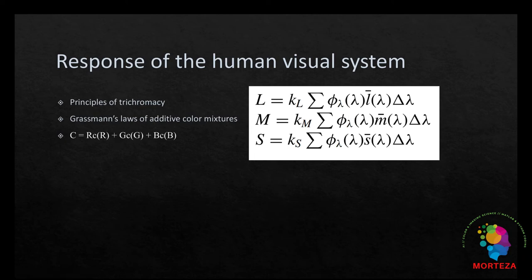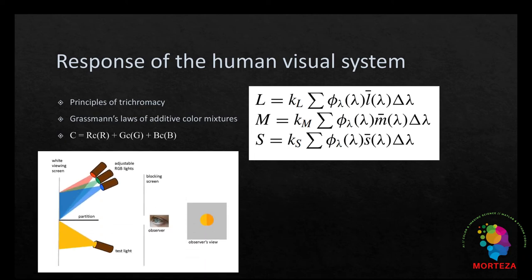Using this concept and setting up a color matching experiment in which a set of spectrum colors were matched using three blue, green, and red monochromatic primaries, the first set of color matching functions, which are some sort of representative of the spectral sensitivities of human visual system, were obtained.